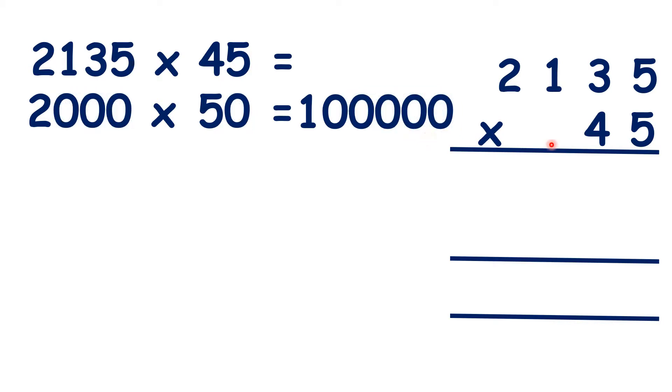So now, we can work out 2,135 times 45, and we know that our answer should be something close to 100,000. So, 5 times 5 is 25, 3 times 5 is 15, plus 2 is 17, 1 times 5 is 5, plus 1 is 6, and 2 times 5 is 10.